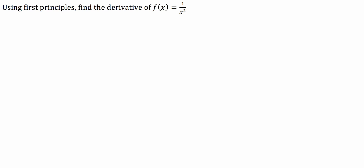G'day guys. I had a kid come to me with this question — apparently he's flummoxed by it. You know who you are if you're watching this. So what I'm going to do is explain how I would go about answering this problem, and hopefully my explanation helps you. The question is: using first principles, find the derivative of f of x equals one over x squared.